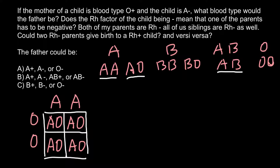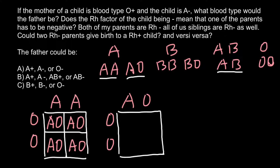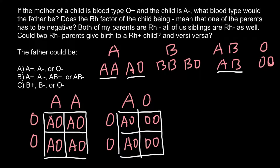Another possible variant: the mother is OO and the father is AO — phenotypically blood group A, but a different genotype. What are the possible outcomes of such a cross? The Punnett square gives AO, AO, OO, and OO. As you see, 50% of the children in such a family would also belong to blood group A, so this genotype also meets the requirements of our problem.